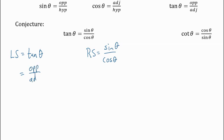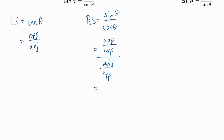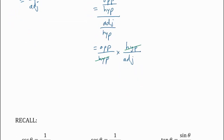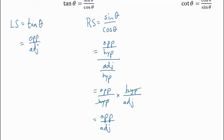Starting on the left side with tan, I change it to opposite over adjacent. For sine, I rewrite it as opposite over hypotenuse, and cosine as adjacent over hypotenuse — so that's sine on top over cosine on the bottom. Then using our understanding of dividing fractions — one fraction divided by another — you flip and multiply. Flipping the bottom fraction, we see the hypotenuses divide to one, leaving opposite over adjacent.